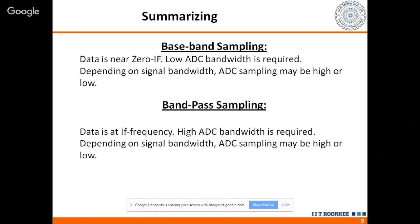To summarize: ADC and DAC are of two types. For baseband sampling, ADC bandwidth is low because data is always near 0 IF, though sampling frequency may be high or low depending on signal bandwidth. For bandpass sampling, ADC bandwidth must be high since data is at IF frequency rather than 0 IF. Whether to use a high sampling rate depends on the actual signal bandwidth, chosen by looking at the region where it will not clash with its aliasing components.